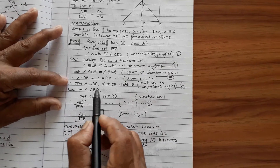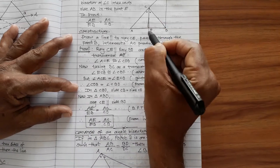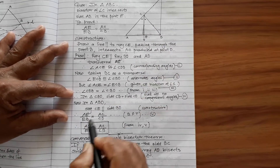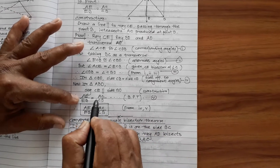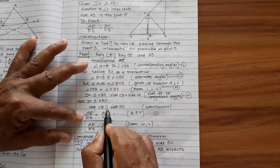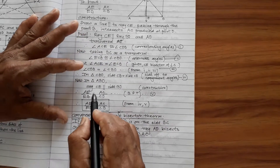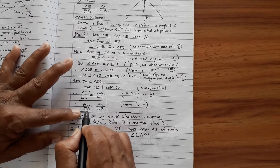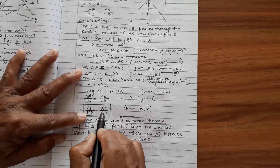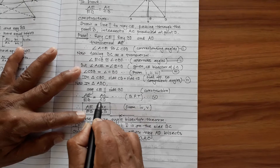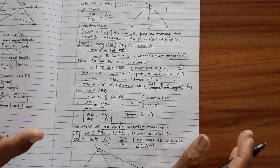Now in triangle ABD, CE is parallel to side BD. Therefore, by BPT: AE upon EB equals AC upon CD. Since CB equals CD, we replace CD with CB. Therefore AE upon EB equals AC upon CB. Hence the theorem is proved.